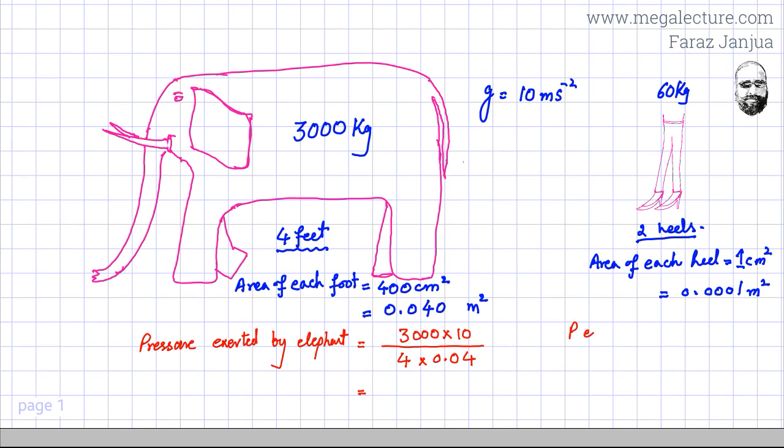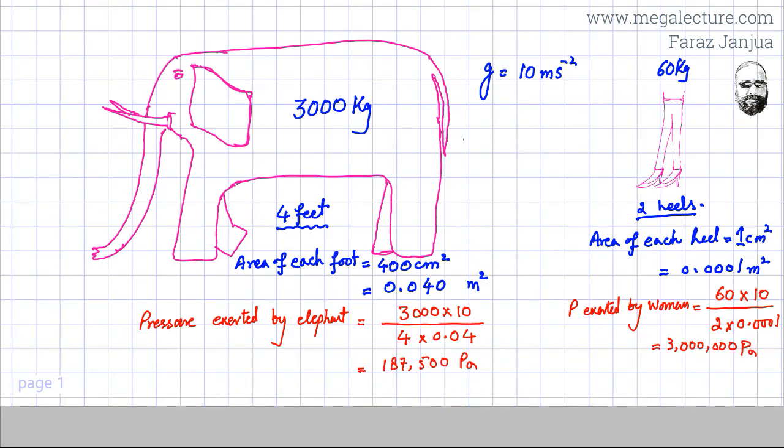Pressure exerted by woman - it will be 60 multiplied by 10 divided by, as the woman has two heels, it will be 0.001 times 2. And now we can just simply put these values in calculator and see what calculator gives us. These are the values my calculator is giving me. 187.5 kilopascal. Too many significant figures, I would make it 188 kilopascal, which is nothing as compared to this enormous pressure that is exerted by the woman on the ground. That is 3 million pascals, actually. 3 megapascal.